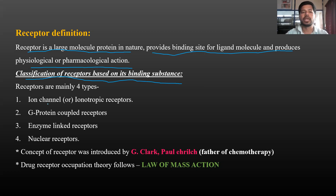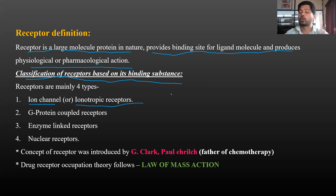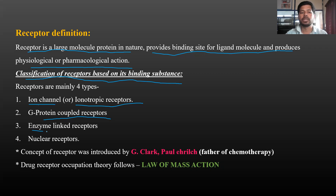There are four types of receptors. First is ion channel receptors, also called ionotropic receptors. Second is G-protein coupled receptors. Third is enzyme-linked receptors. Fourth is nuclear receptors.